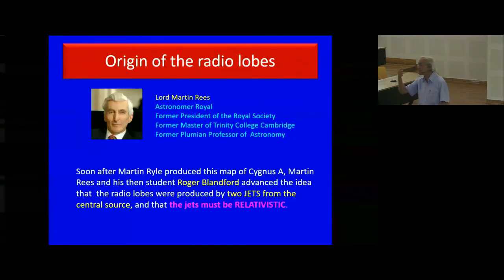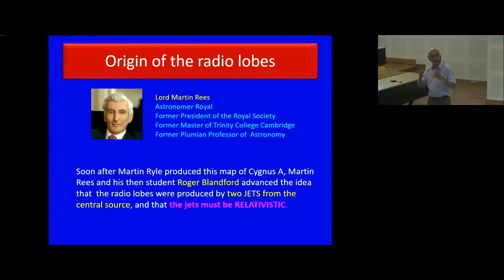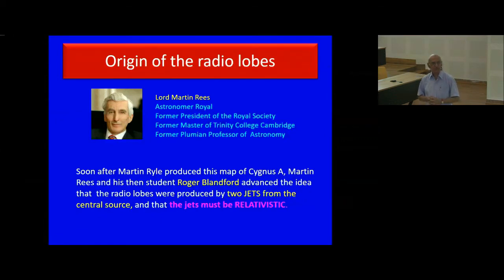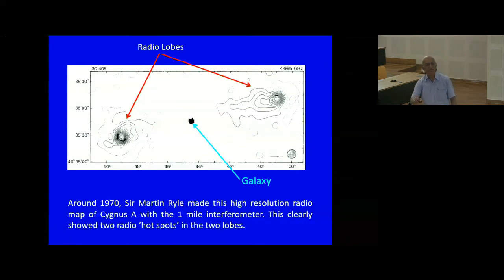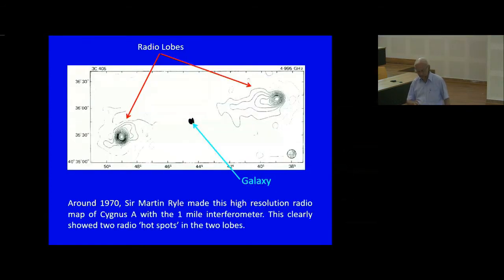At that stage, Martin Rees — a very young man then, now very famous as Astronomer Royal, former president of the Royal Society, master of Trinity College, and Plumian Professor of Astronomy — and his very clever student Roger Blandford advanced the idea that the radio lobes detected by Ryle in Cygnus A are produced by two relativistic jets from the central object. The idea was that there is a relativistic jet from the central elliptical galaxy Cygnus A, and that jet is producing all the action. The hotspots in the radio lobes correspond to where the ram pressure of the jet equals the ram pressure of the intergalactic medium — just as in the supernova remnant case.